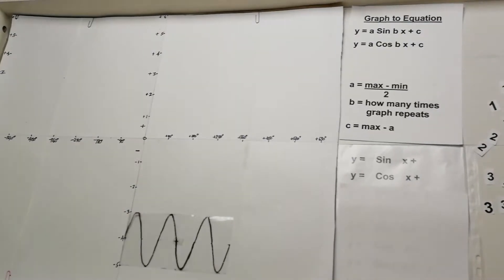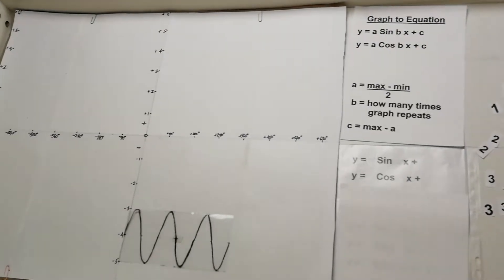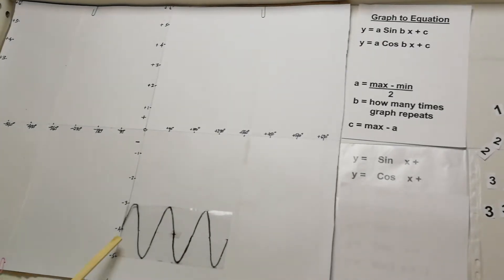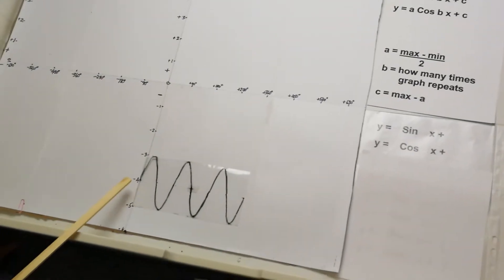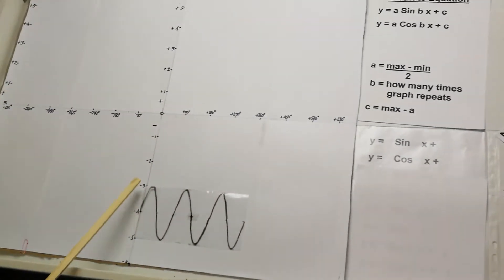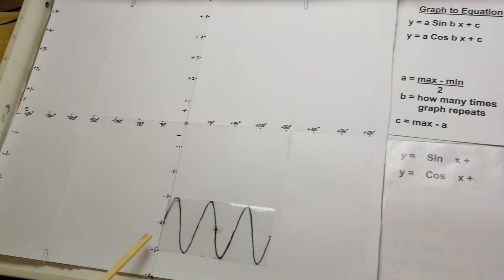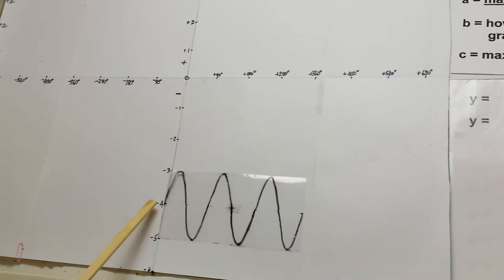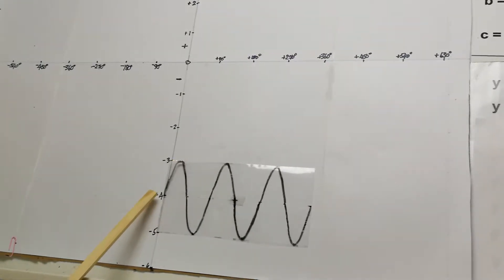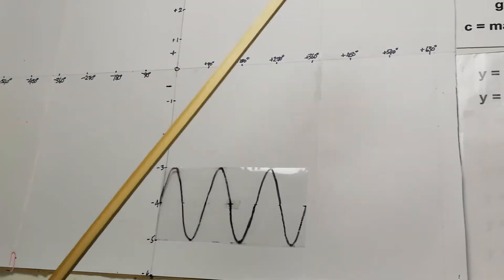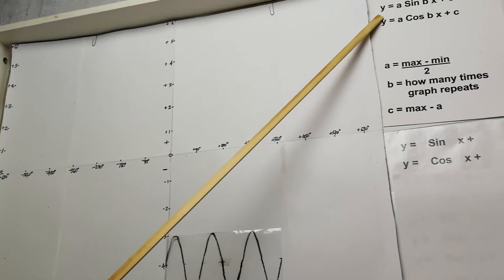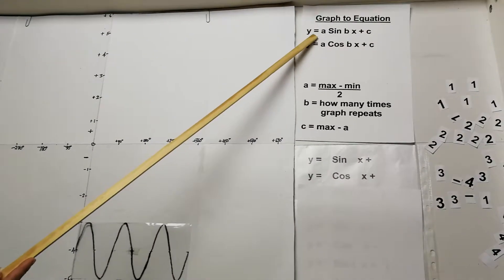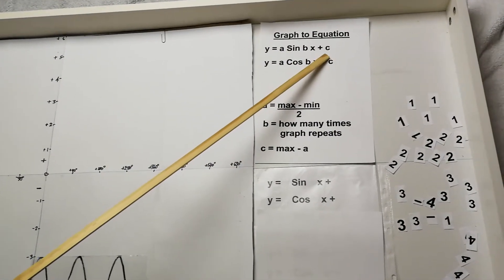We're going to be going from the graph to the equation. Here we have a graph that starts in the center — from top to bottom it starts in the center — so this tells me it's a sin graph. The format we're going to use is y = a·sin(bx) + c.